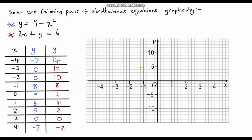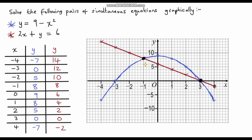Now I'll plot both equations on the graph. You can see my quadratic isn't perfect, but the most important things are the points of intersection, and there are two of them. The first point has coordinates negative one and eight, and the second point has coordinates three and zero. So our solutions are x equals negative one and y equals eight, or x equals three and y equals zero.